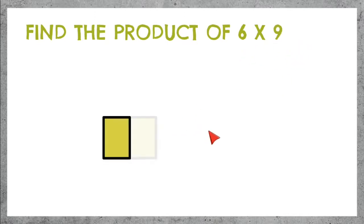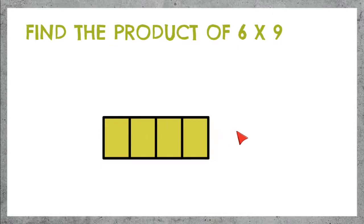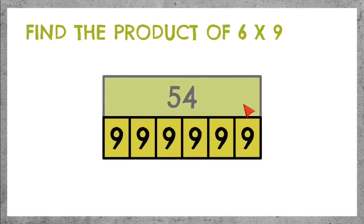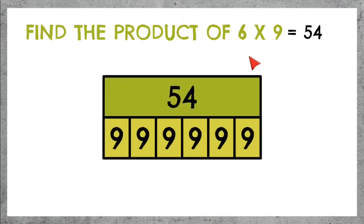6 times 9 — we need 6 parts, and each of those has to have 9 inside. If we add all of that up, we get 54. 6 times 9 equals 54.